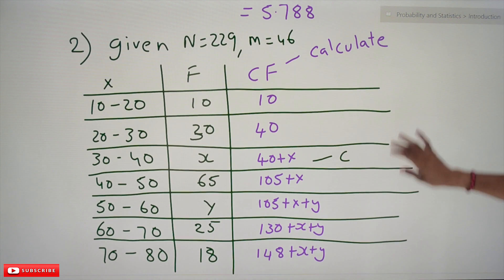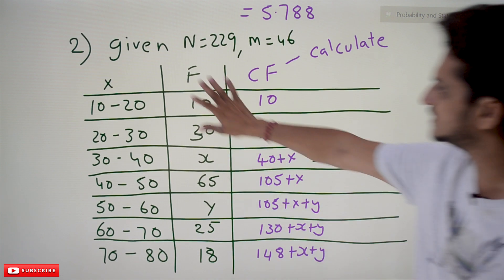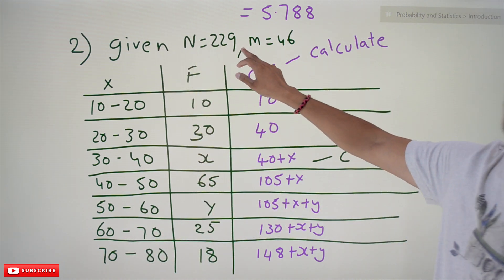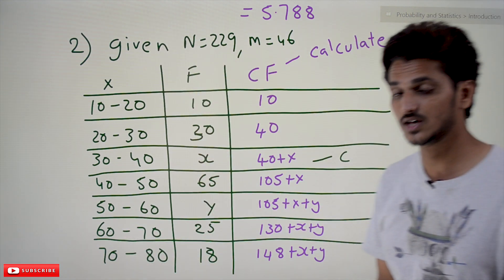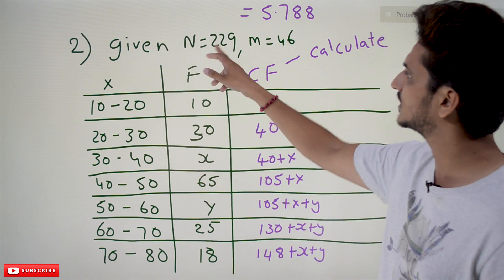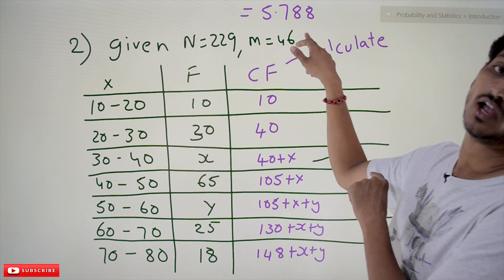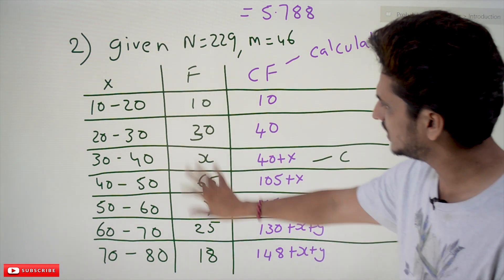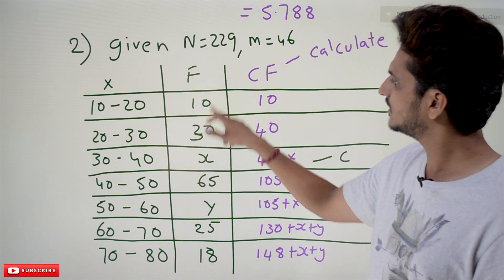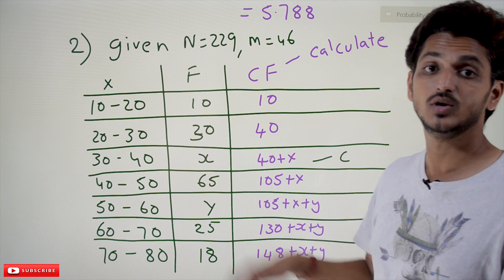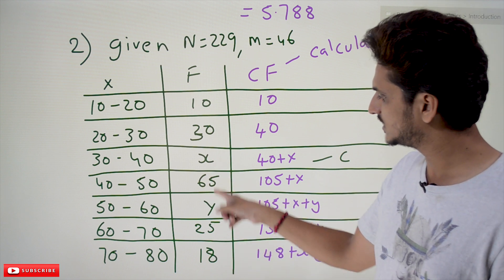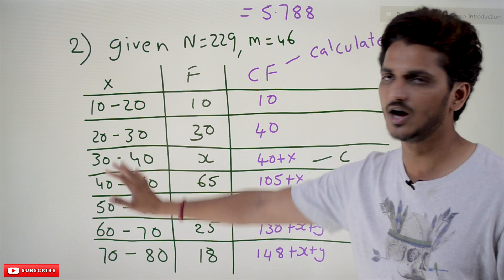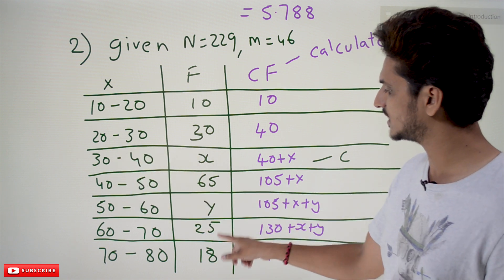Coming to the second example, here they have given a table. N = 229 (number of employees) and the median value M = 46 are both given. In the frequency column, some values are known: 10, 30, then X (unknown), 65, then Y (unknown), 25, 18. We have to identify X and Y values.